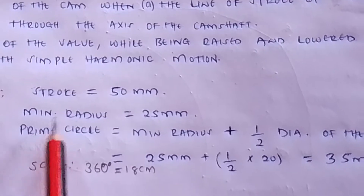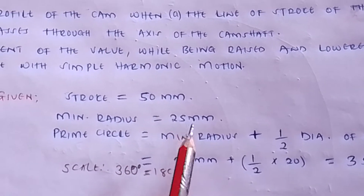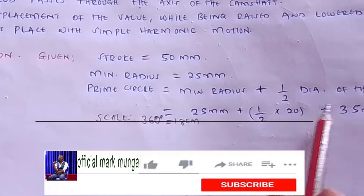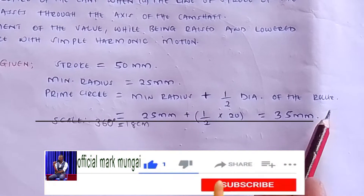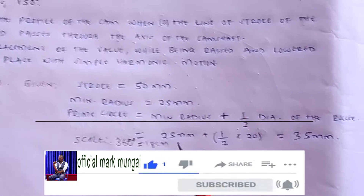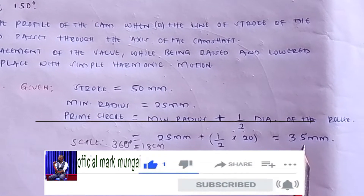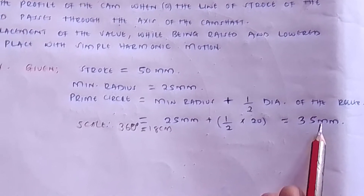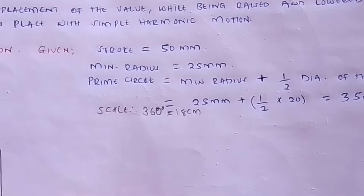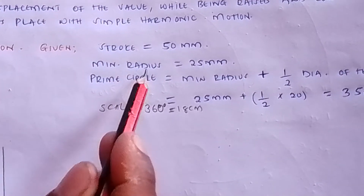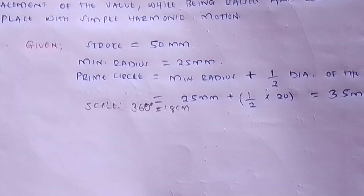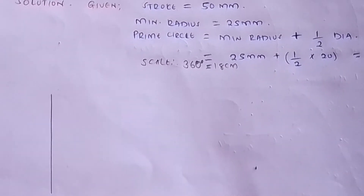Solution: given that the stroke is 50 millimeters and the minimum radius is 25 millimeters, the prime circle equals the minimum radius plus half the diameter of the roller — that gives us 35 millimeters. With a roller follower, you must use the prime circle rather than just the base circle minimum radius.